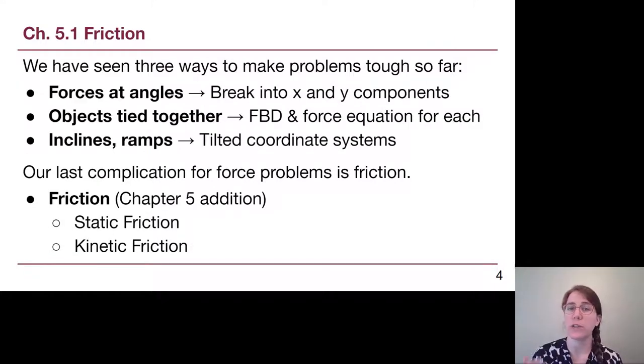So up until this point, we've seen three different ways to make chapter 4 force problems difficult. If all of our forces are just horizontal or just vertical, the problem is much simpler than if we have forces at angles. But if we have forces at angles, we know exactly what to do with them. We break those forces into x and y components. We've also seen that it is easier to solve a problem that has only one object, and it's more work to solve an object tied together problem. But we also know how to solve objects tied together. We draw a force diagram for each object, and we write down a force equation for each object. And then we've seen that when we have inclines and ramps, it is a little bit harder to think about because we have to have this whole new perspective. But we know how to handle that we know to create a tilted coordinate system and then treat everything as if it's just in this new x and y direction.